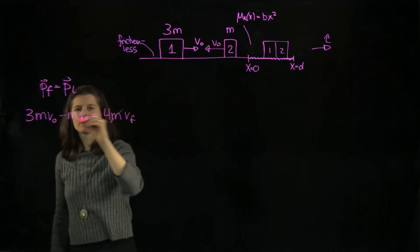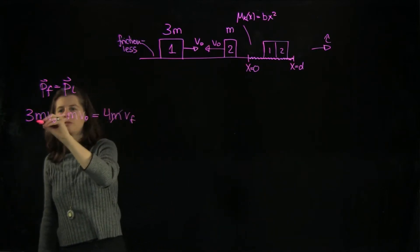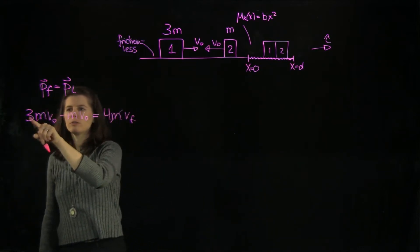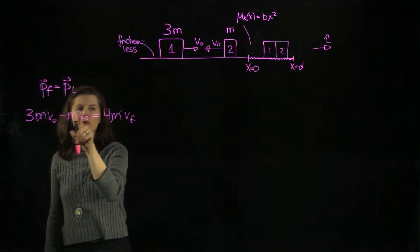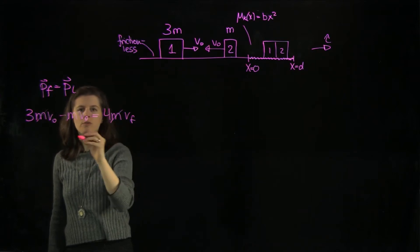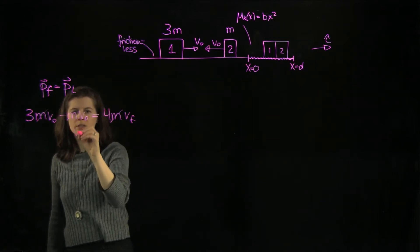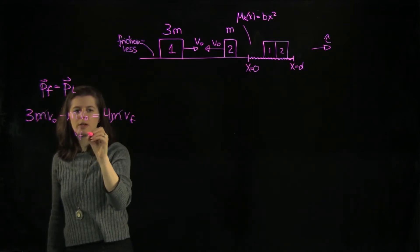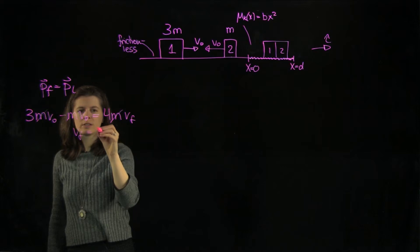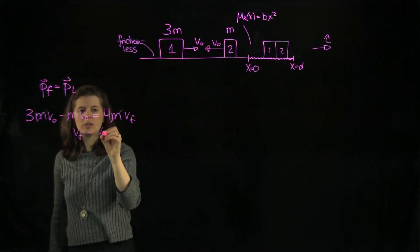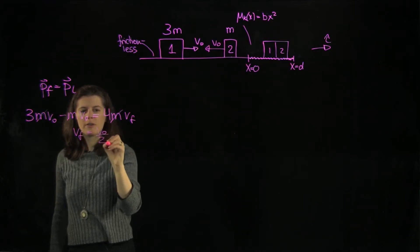The m's cancel out. We get 2 on the left and 4 on the right, so the final velocity is v0 over 2, or one-half v0.